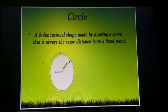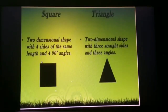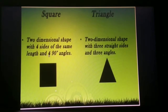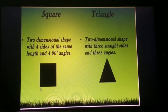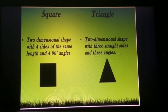We learned about circles in a previous chapter. Now square and triangle. A square is a two-dimensional shape with four sides of the same length and four 90-degree angles. Now a triangle is a two-dimensional shape with three straight lines and three angles.